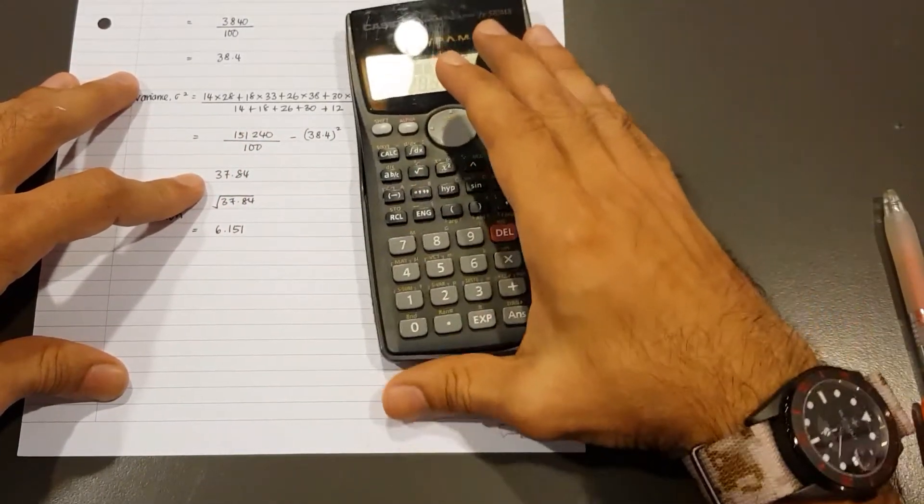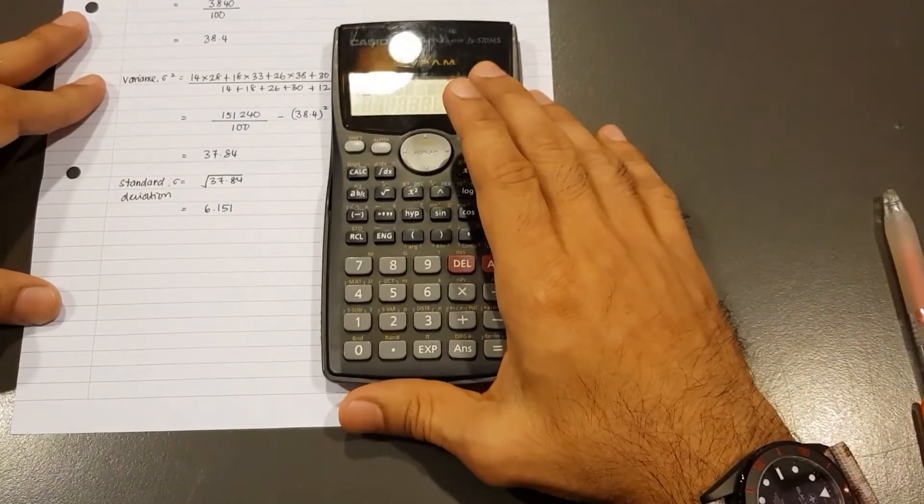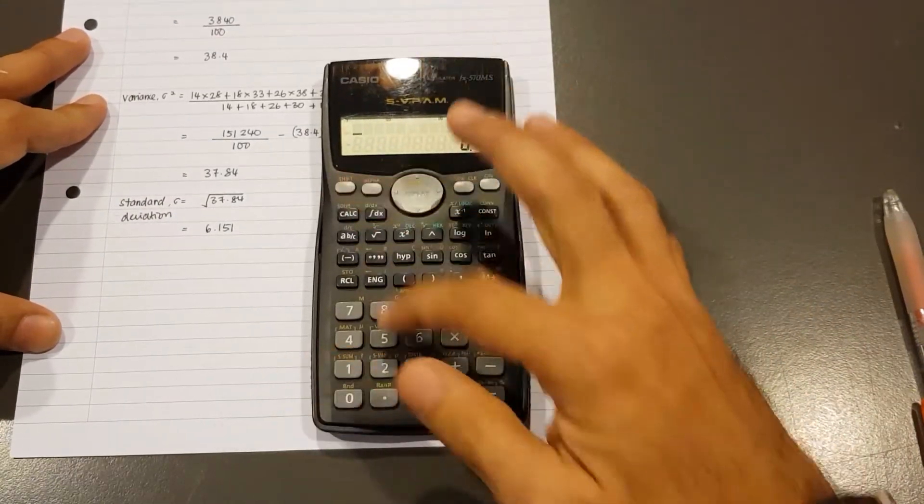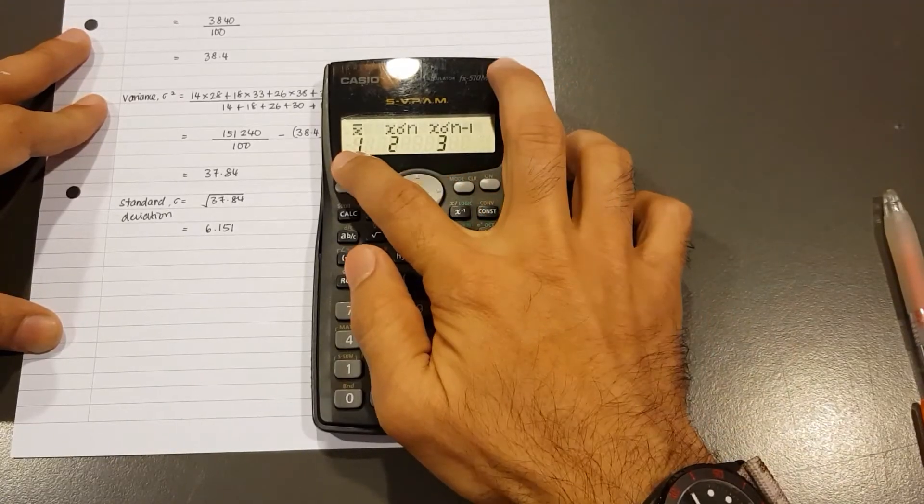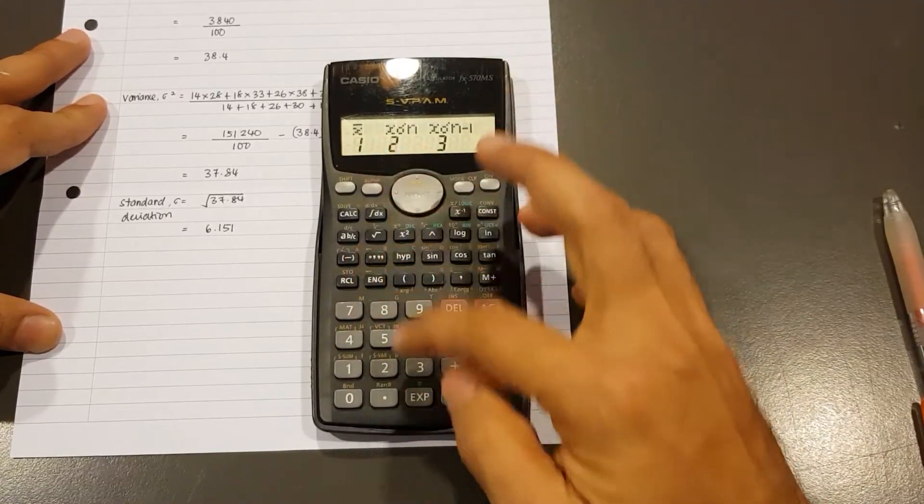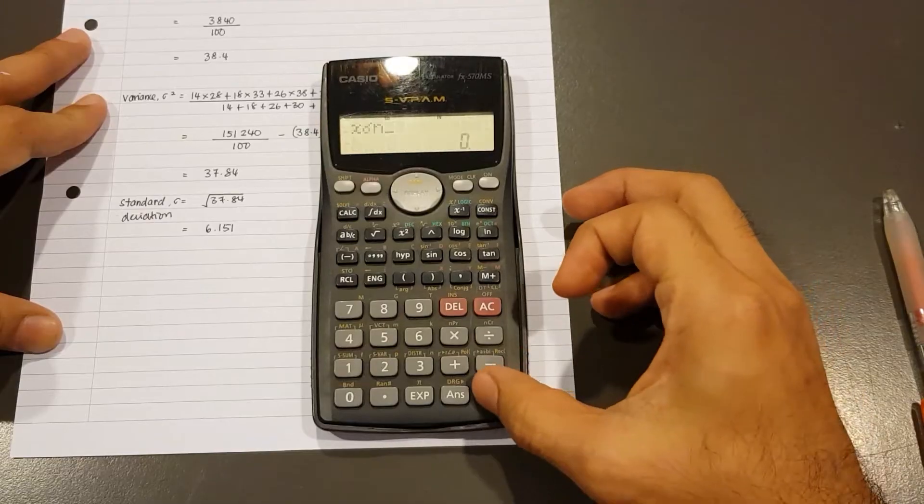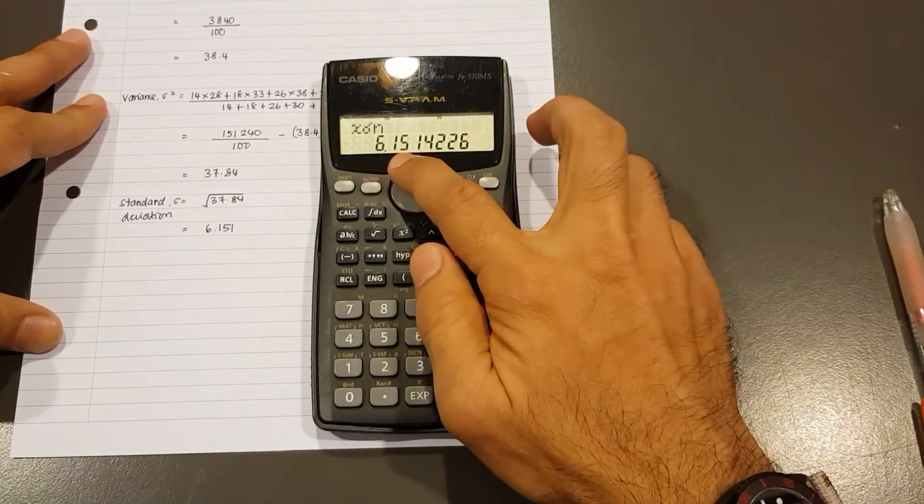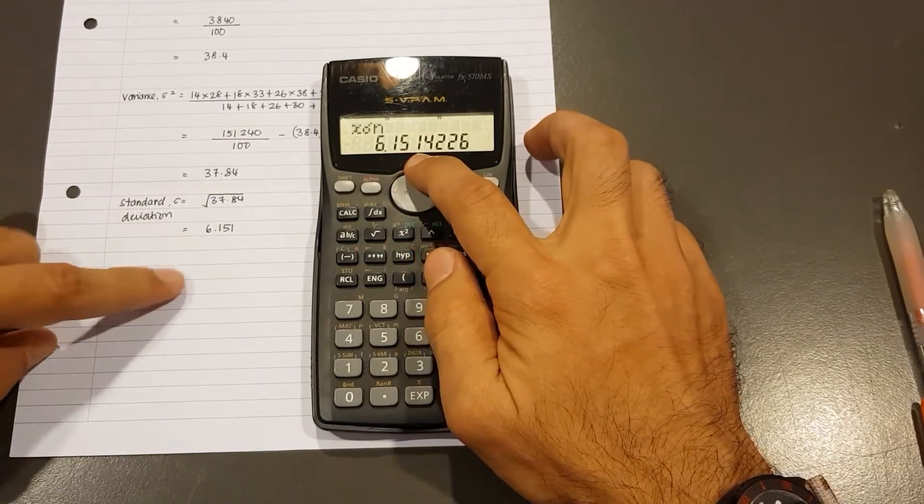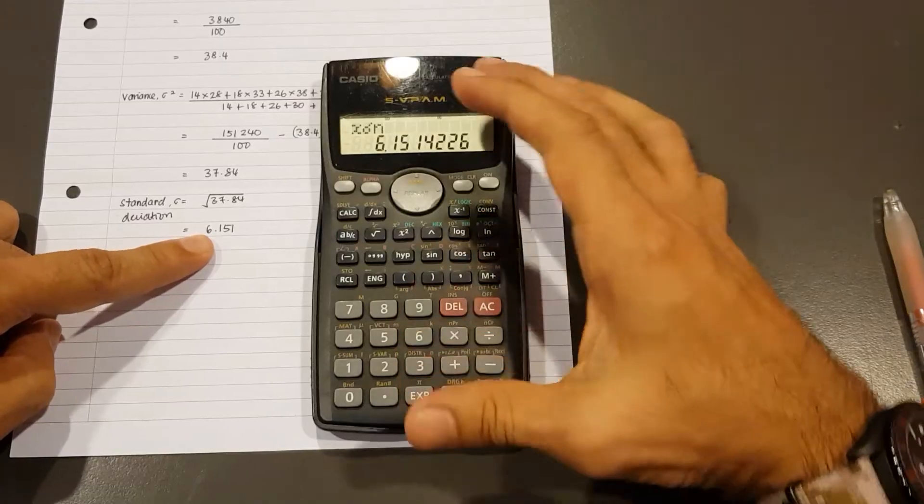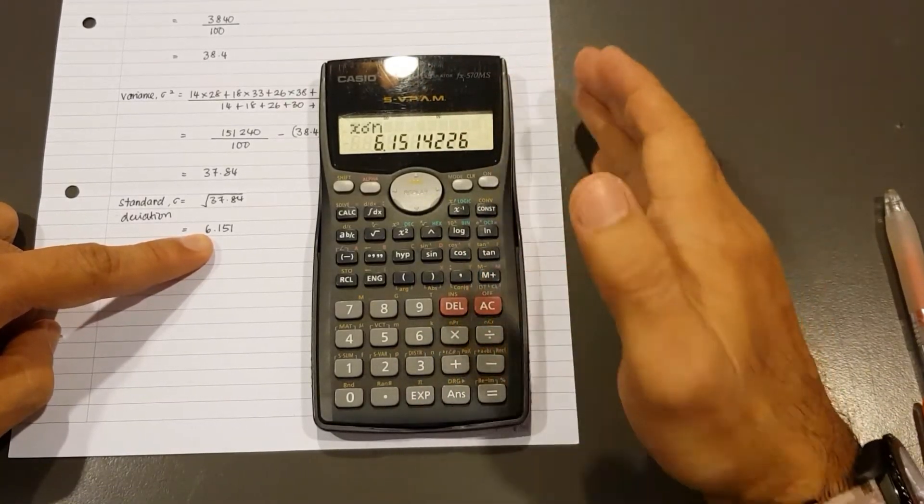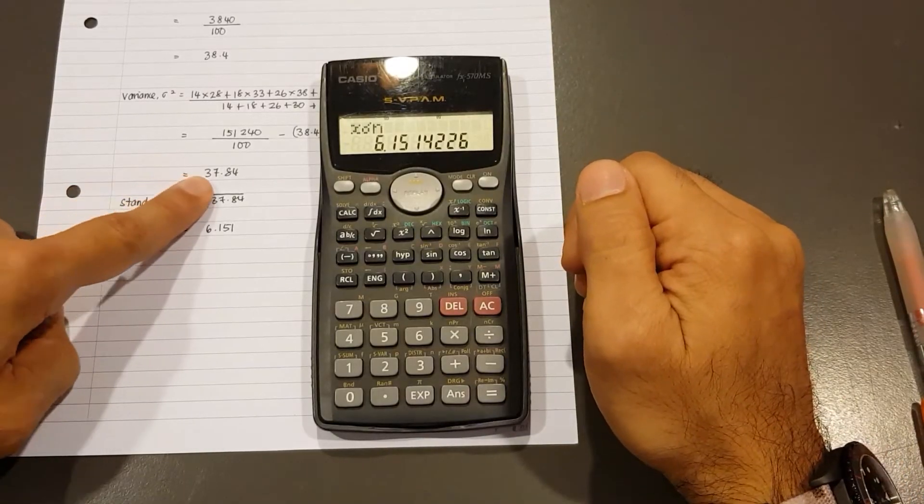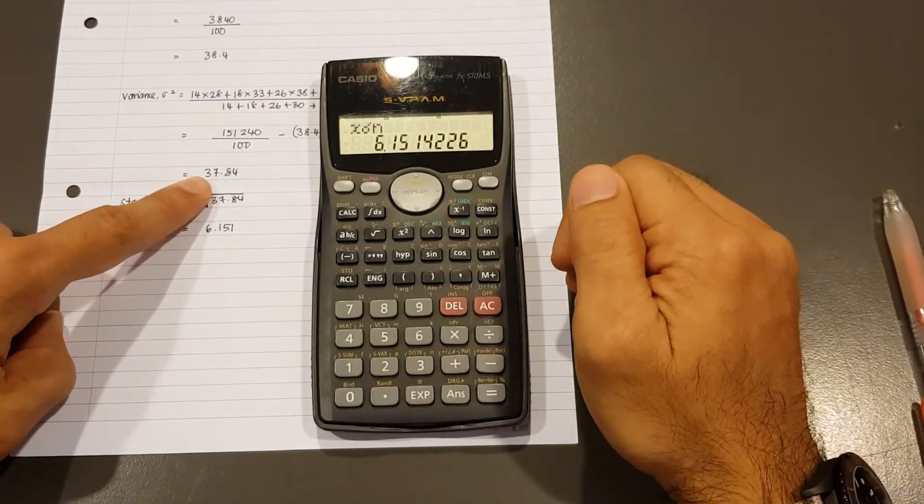Now, to find the answer for the variance or even the standard deviation, we now press Shift, 2. But it's number 2 now. Because number 1 is mean. Number 2. When I press number 2 and I press equal to, I get 6.151, which is actually the standard deviation. That's because the calculator is not able to give us the variance. Now, if we want to obtain the variance, which is clearly this number, 37.84.